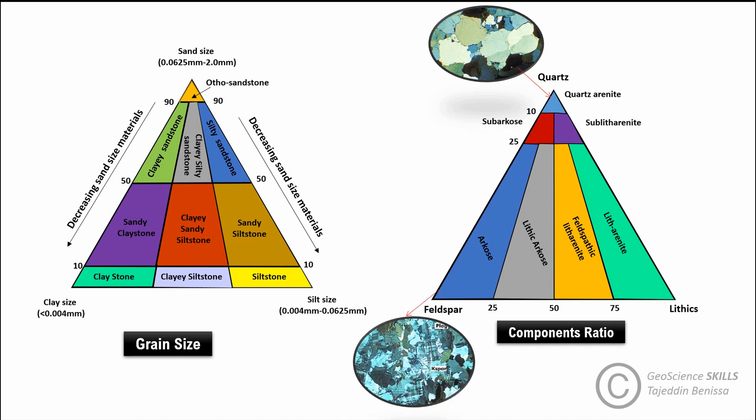Feldspar represents a group of aluminum and silica minerals, such as potassium feldspar (orthoclase) and plagioclase. It is the second most common mineral in Earth's crust after quartz. These minerals are present in different rock types, but unlike quartz, feldspar is usually susceptible to weathering and diagenetic processes.